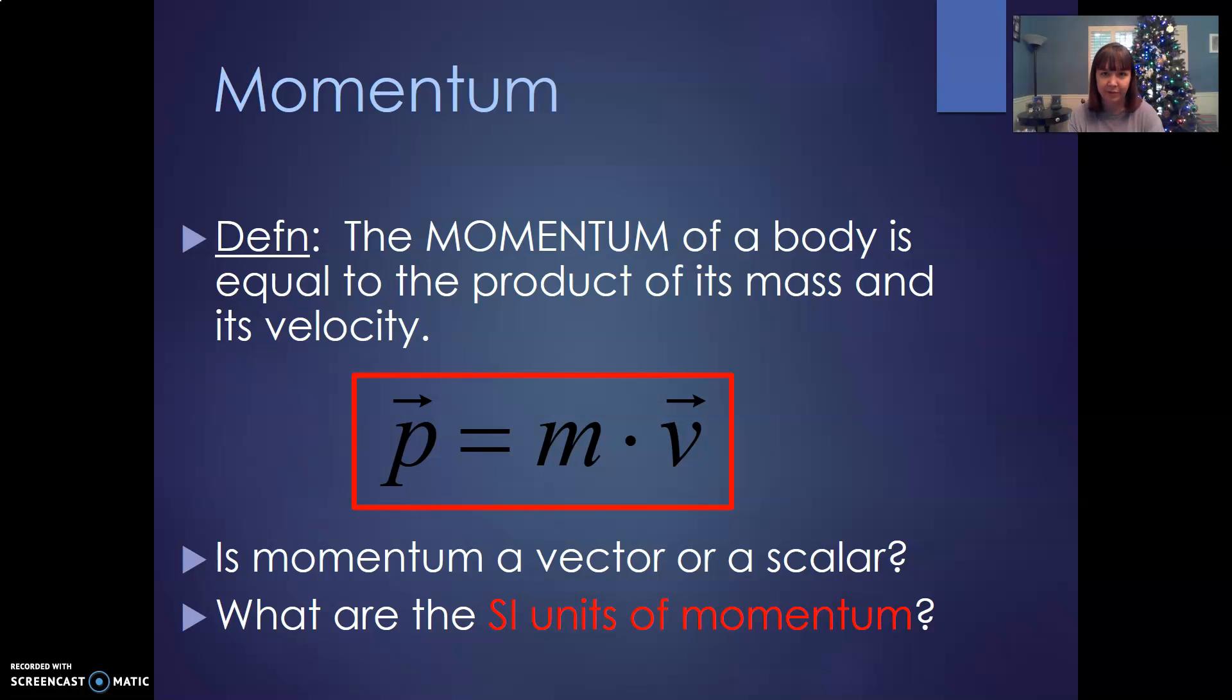And then the units of momentum, well, mass is kilograms and velocity is meters per second. You would think they'd come up with some cool name for it. There's not. It's kilogram meters per second. And momentum is represented with that P because M was already taken.